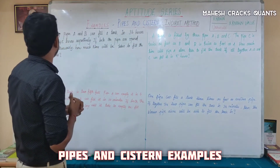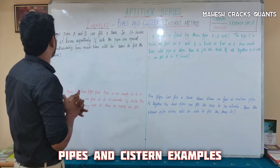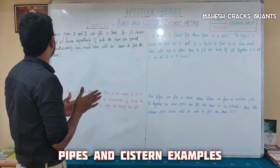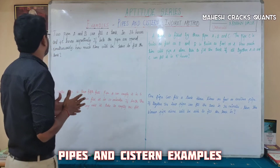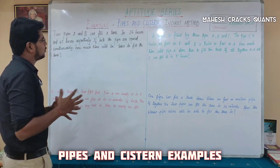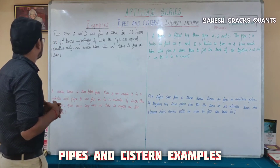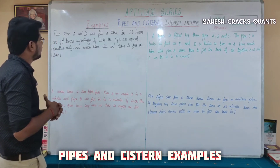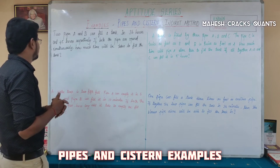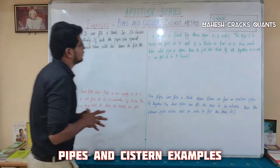First question: Two pipes A and B can fill the tank in 36 hours and 45 hours respectively. If both pipes are opened simultaneously, how much time will be taken to fill the tank?